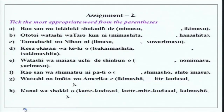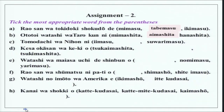Take the most appropriate word from the brackets. The first one is Rao-san wa tokidoki shokudo de tabimasu — 'de' here is for the activity being performed at a certain place. The second one uses ototoi: Watashi wa Taro-kun ni aimashita — past tense for ototoi, a past time expression. The third is tomodachi wa Nihon ni imasu. Note that iimasu with a long sound means 'to say or speak,' while imasu means 'to be.' Then, kesa, okaasan wa keeki wo tsukurimashita — this is for kesa.